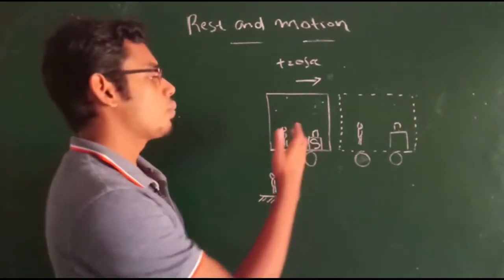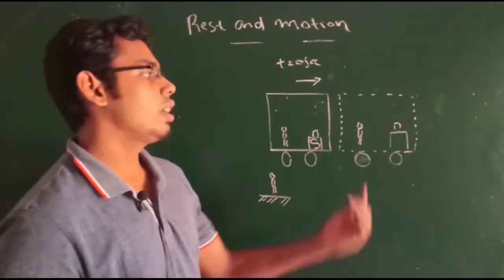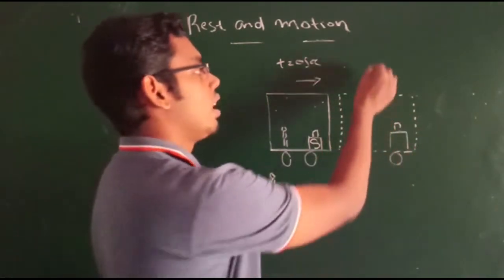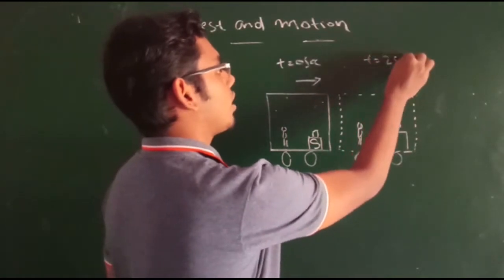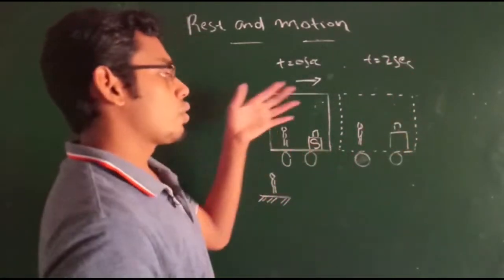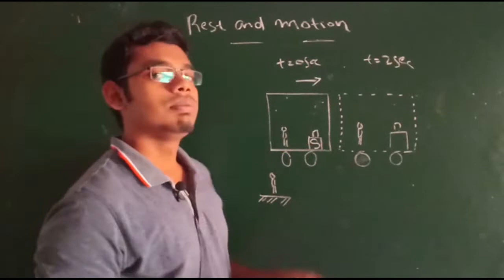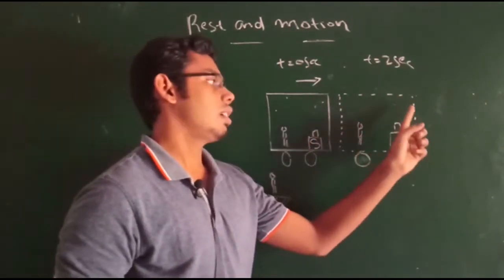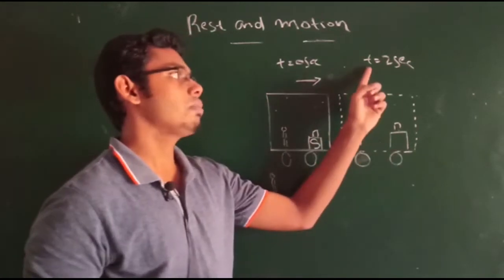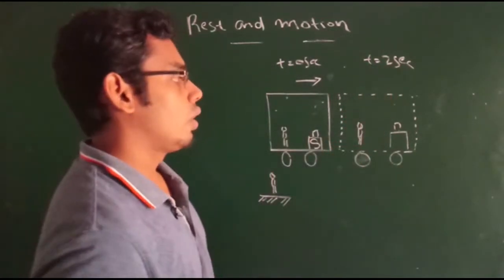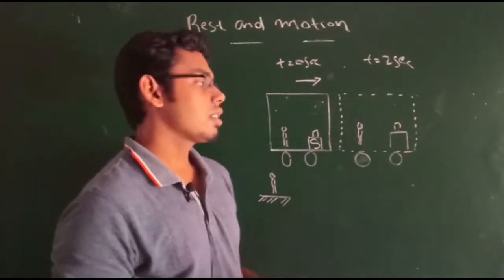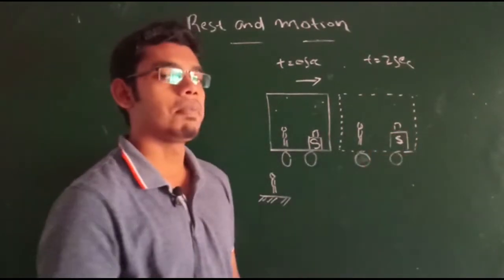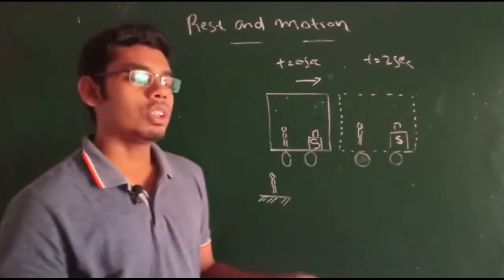As you know, when time moves the bus will reach another position. Here I have shown a dotted line representing the position of the bus at time t equals two seconds, because the bus is not stationary — it is moving. Due to that movement, the bus reaches a new position. Inside the bus you can see the same passenger and the same suitcase.